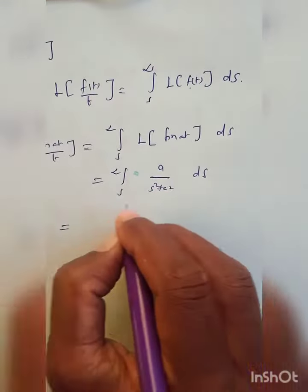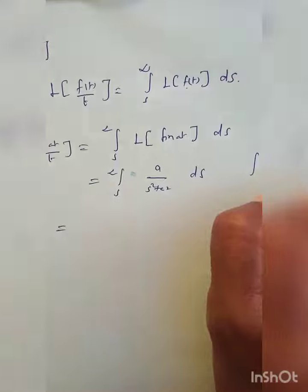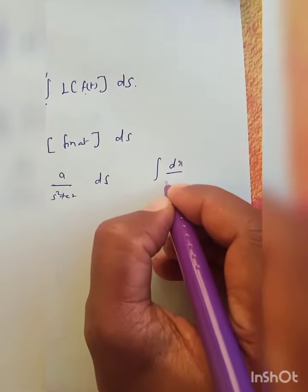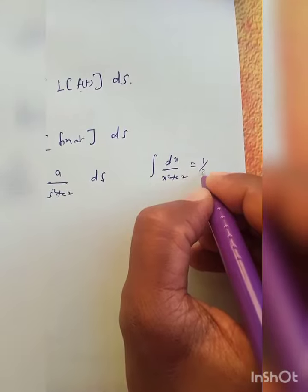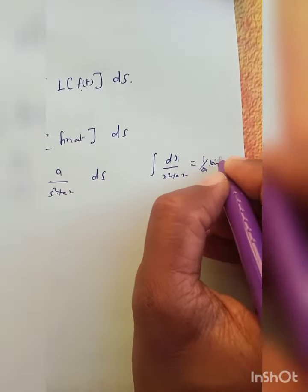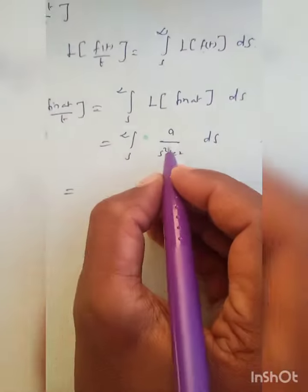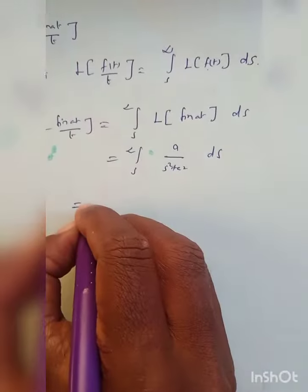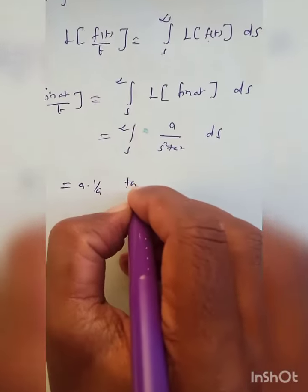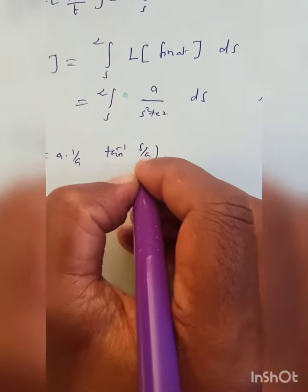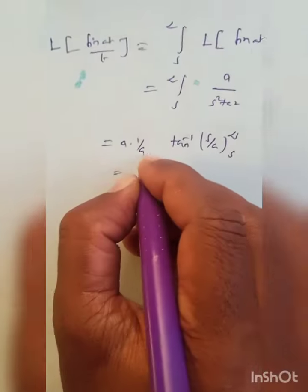Now apply the integration formula: the integral of dx / (x² + a²) equals (1/a) tan⁻¹(x/a). Similarly, we apply that formula here — a into (1/a), giving tan⁻¹(s/a), with the limit as s tends to infinity. The a's cancel.